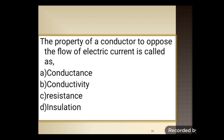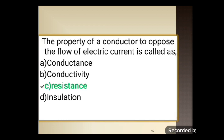Next question: the property of a conductor to oppose the flow of electric current is called as — option A: conductance, option B: conductivity, option C: resistance, option D: insulation. The property of a conductor to oppose the flow of electric current is called as resistance. Option C, resistance, is the correct answer.